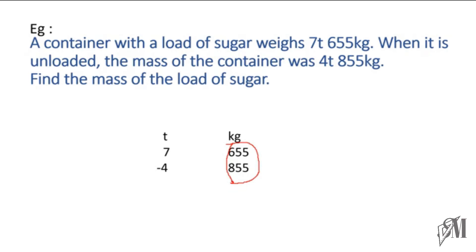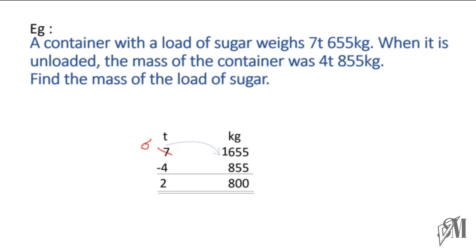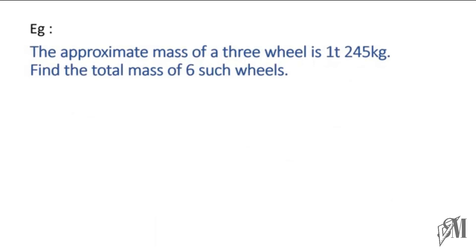655 cannot be subtracted from 855, therefore we must take one ton from the tons side. So it becomes 1655 kilograms on that side, and meanwhile you should remember the tons column is now only 6 tons. Let's do the normal subtraction — you will get the answer as 2 tons and 800 kilograms. So this is the mass of the sugar.